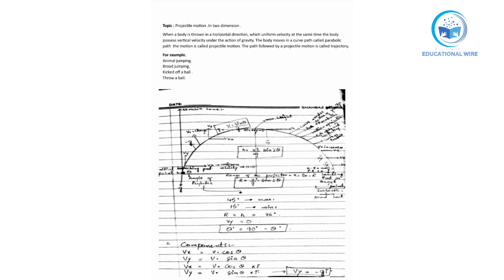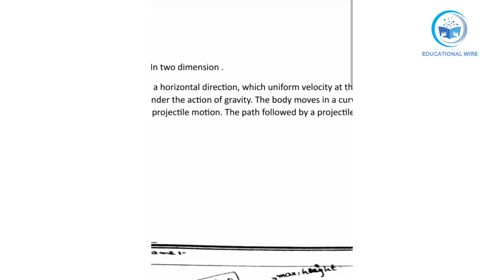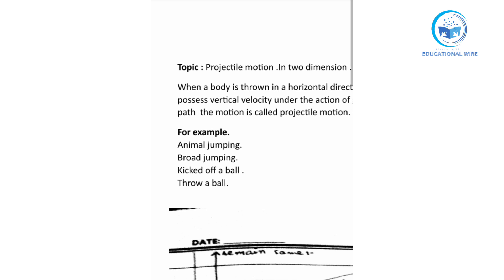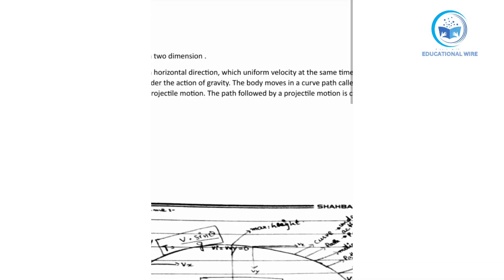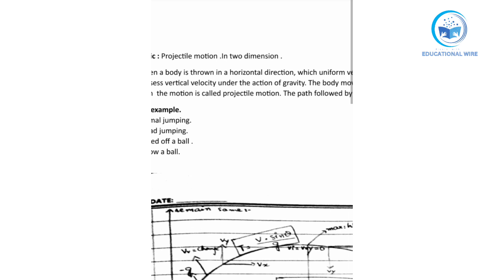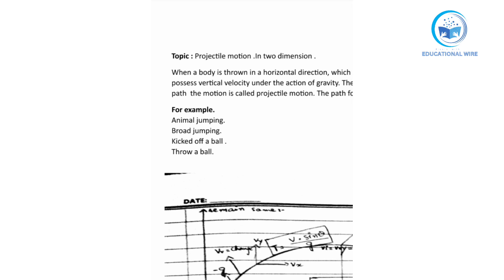Hello everyone, hope you all are doing well. We will start our new topic: projectile motion in two dimensions. The definition is that when a body is thrown in a horizontal direction with uniform velocity, at the same time the body possesses vertical velocity under the action of gravity, and the body moves in a curved path called a parabolic path. This motion is called projectile motion. The path followed by a projectile is called trajectory. Examples include an animal jumping, broad jumping, kicking a ball, and throwing a ball.